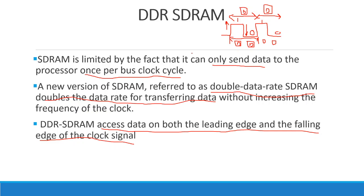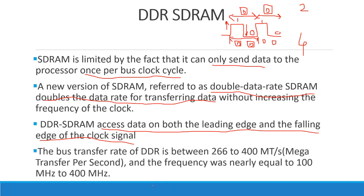With DDR SDRAM running, two clock cycles will produce four data transfers — double the output of regular SDRAM. That is why it is named Double Data Rate. The bus transfer rate of DDR is between 266 and 400 MT/s at frequencies of 100 MHz to 200 MHz.